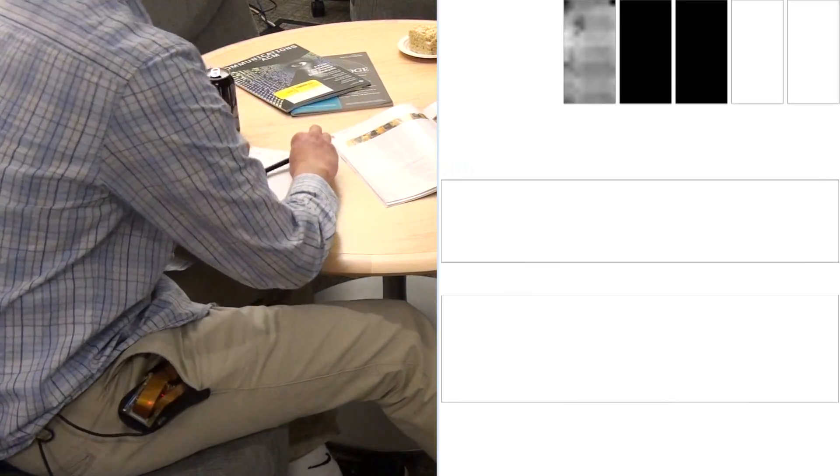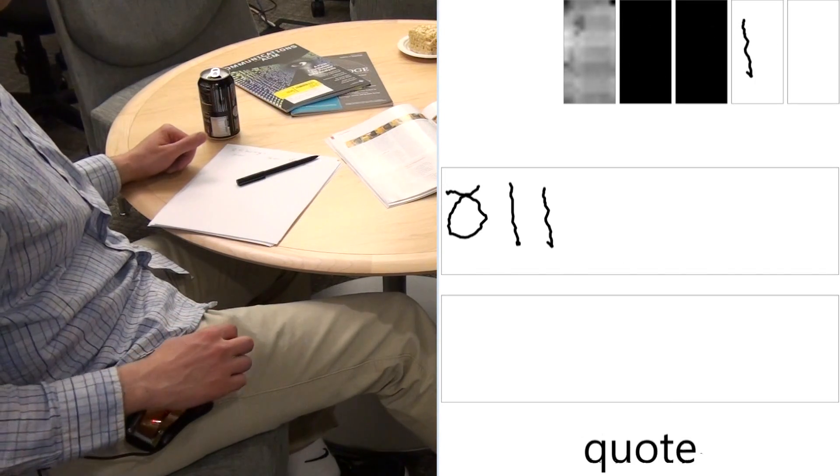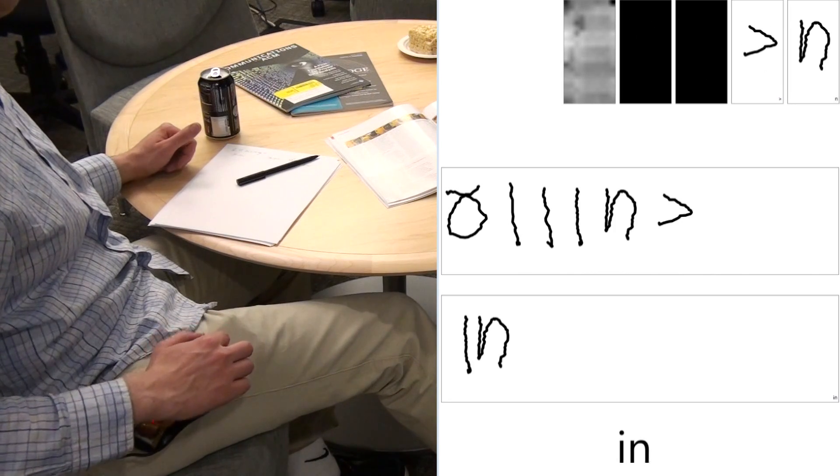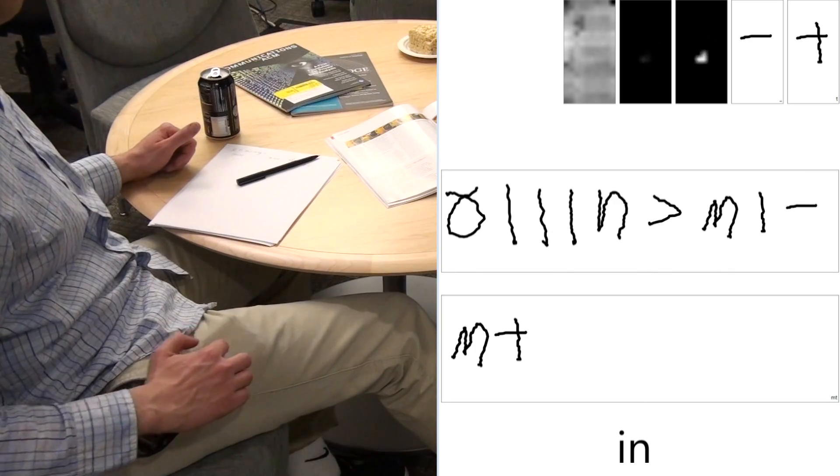A user can also dismiss an incoming phone call while in a meeting and quickly respond to it with a text message using our alphanumeric text entry method. This is all possible without removing the device from the pocket.